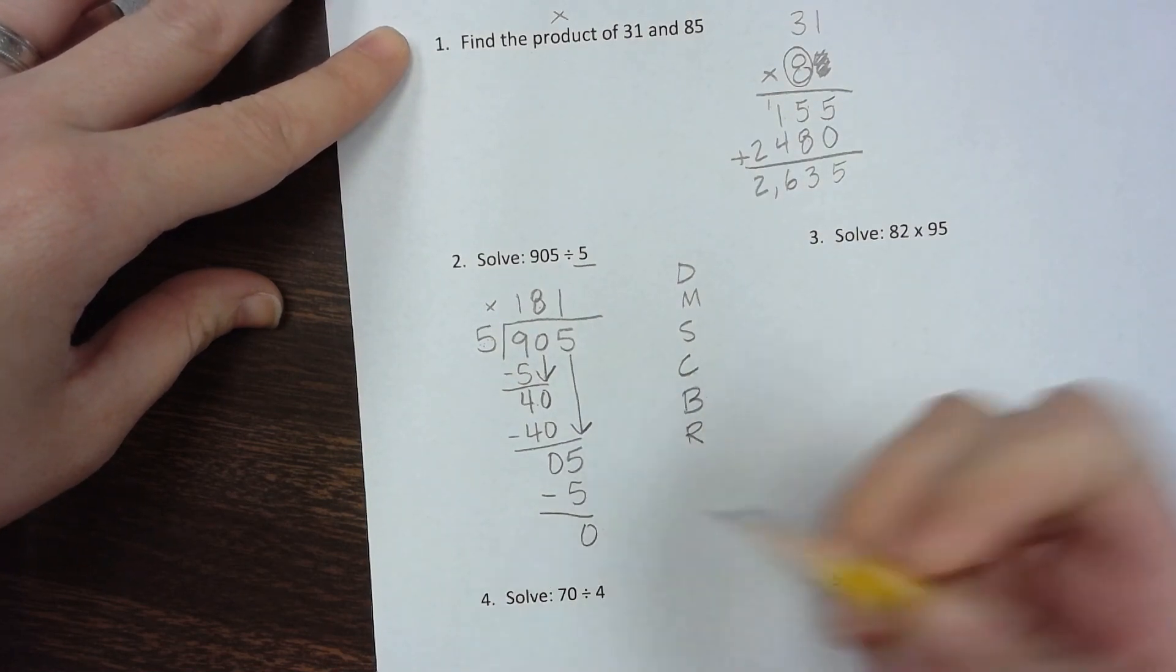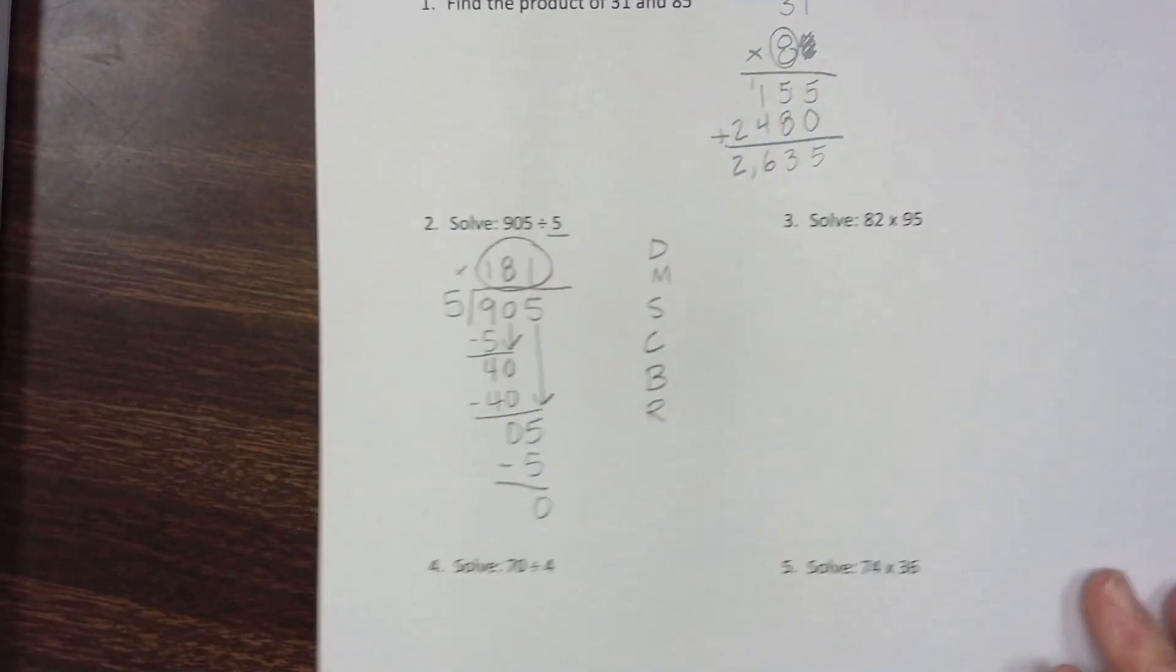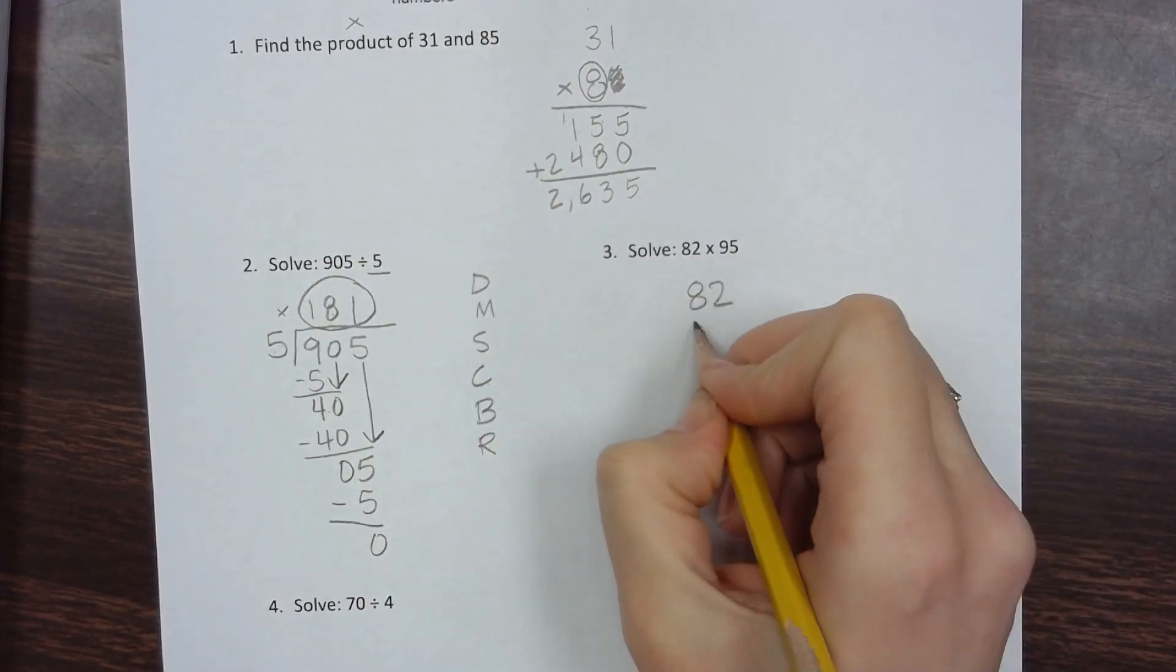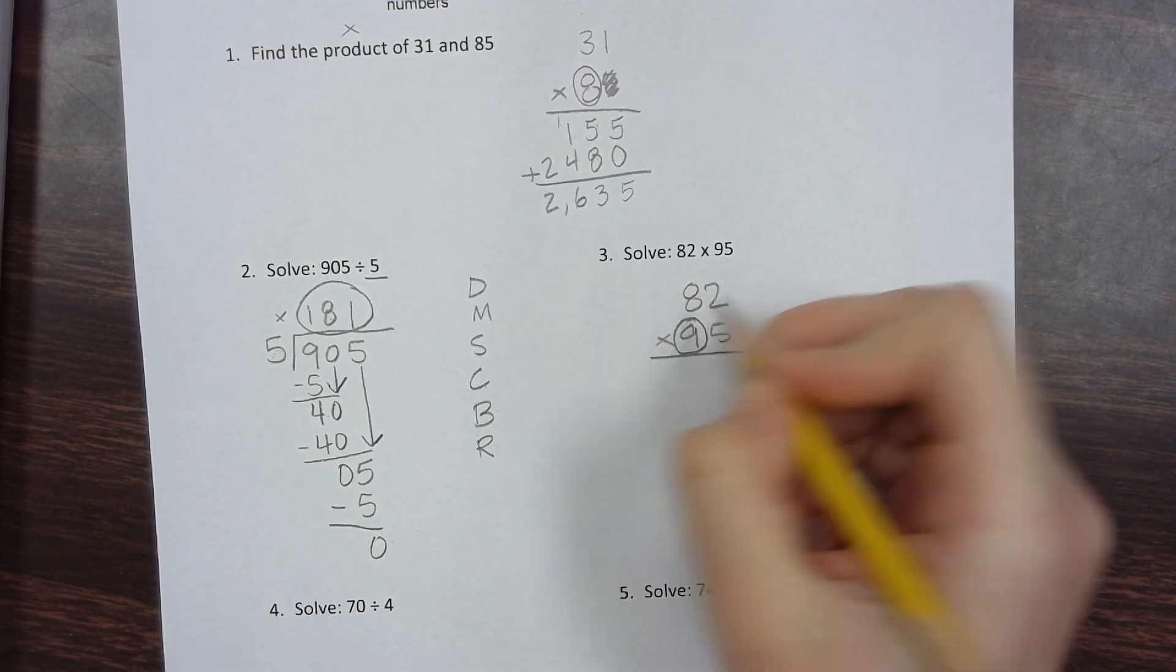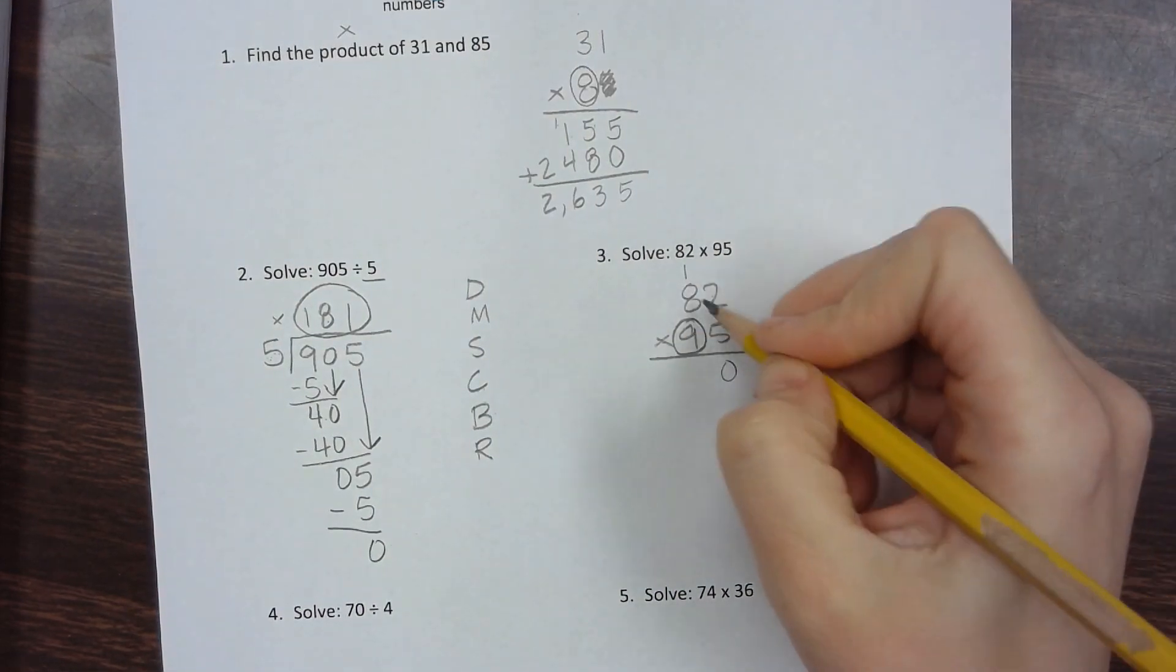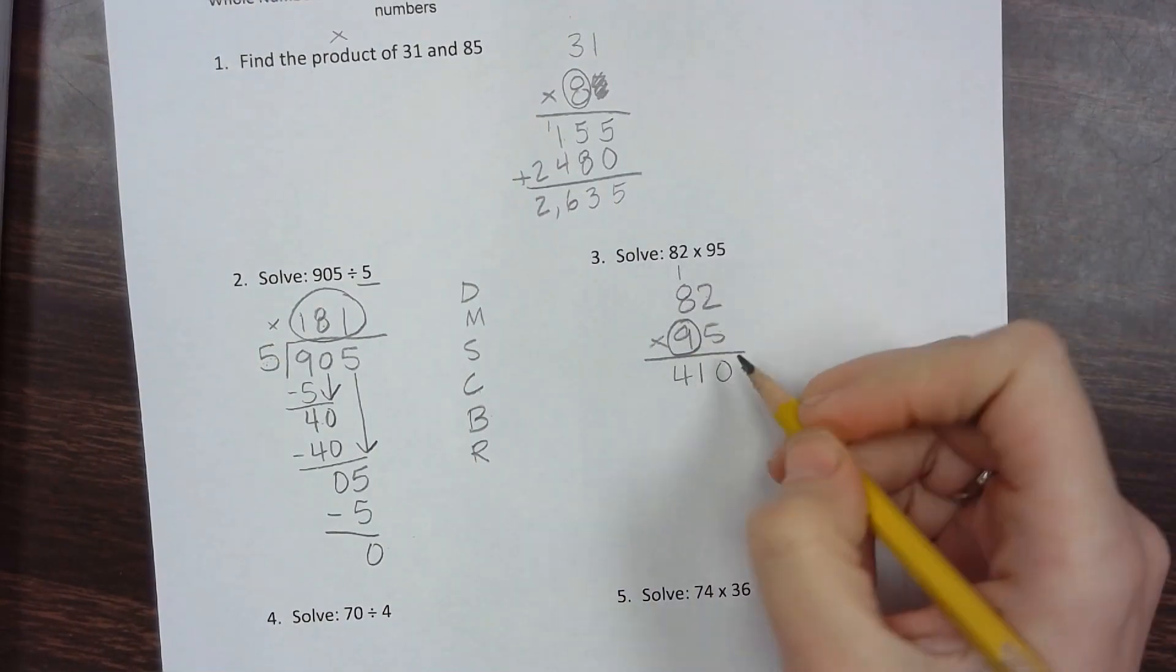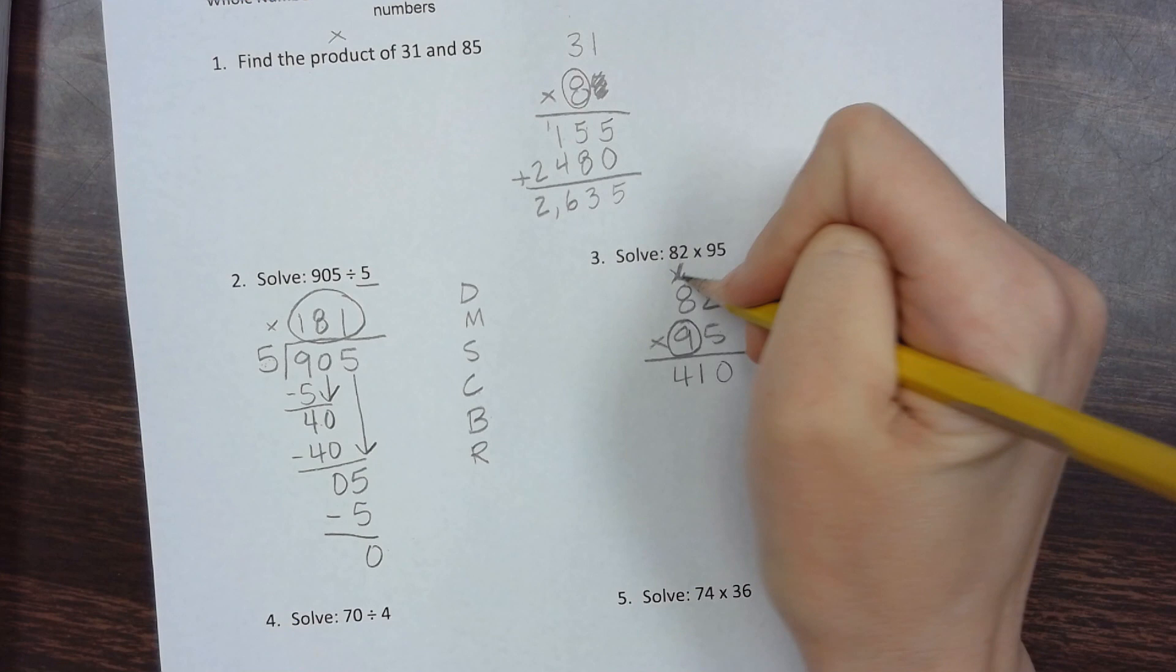Number three is 82 times 95. We'll stack them and circle the tens digit on the bottom. Let's begin: 5 times 2 is 10, 5 times 8 is 40, plus 1 is 41. Housekeeping: cross off the ones digit, add a zero.